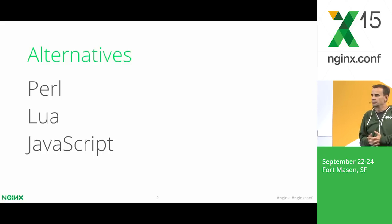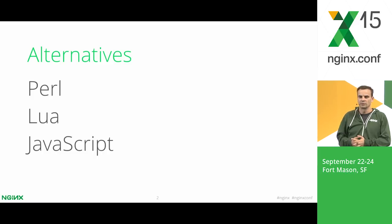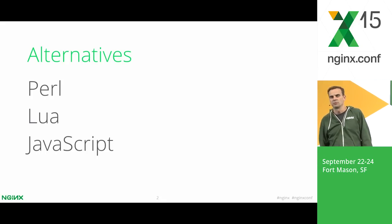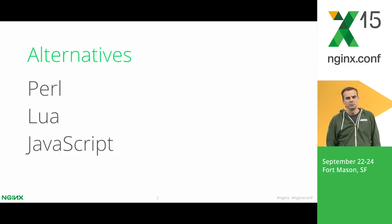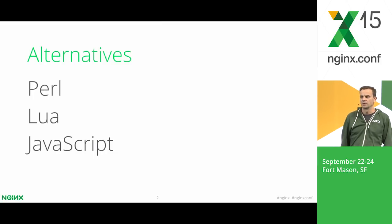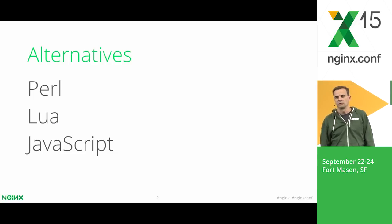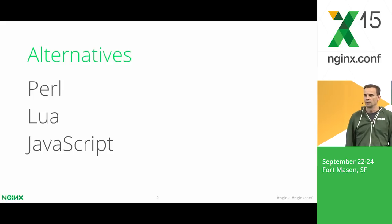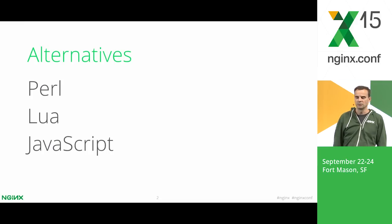Since the beginning of Nginx development, I thought that Nginx should have some capability to script inside the server. The first attempt was made in 2005. I tried to embed Perl because it was, and still is, my favorite language for various scripting things. But Perl has some drawbacks that make it unsuitable to embed in the server. For example, on memory shortage, Perl just exits. And it may be acceptable in scripts, but it's very bad for a server, because a server should behave more gracefully in this case.